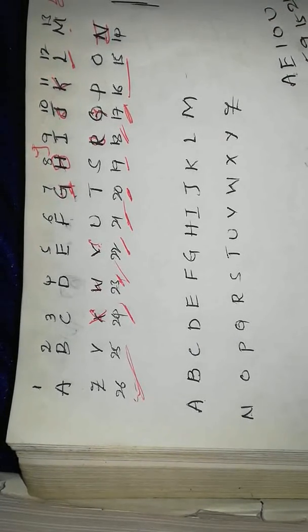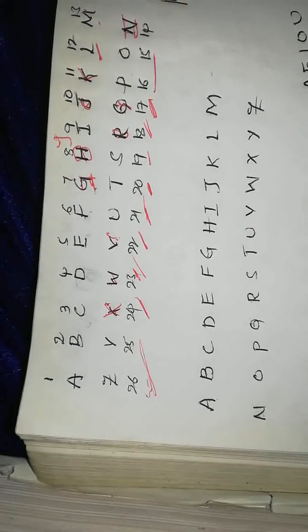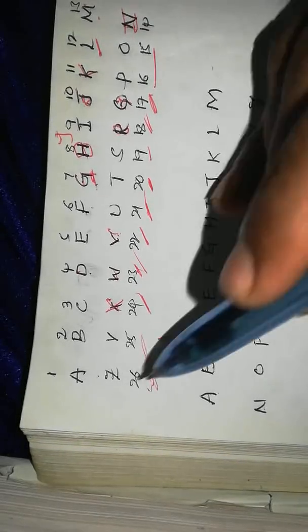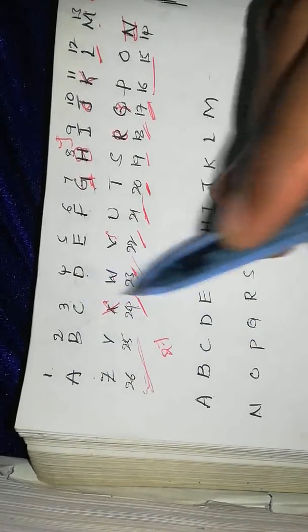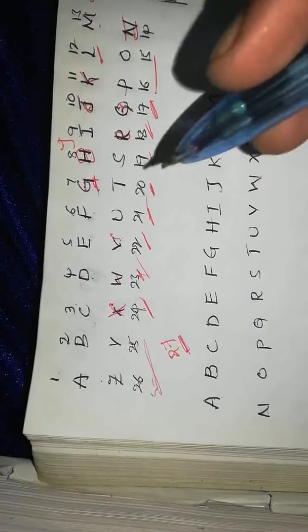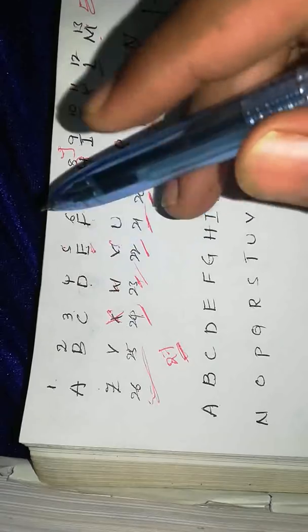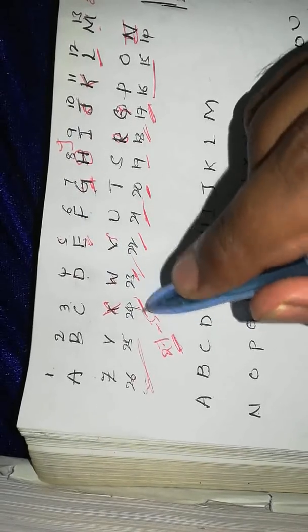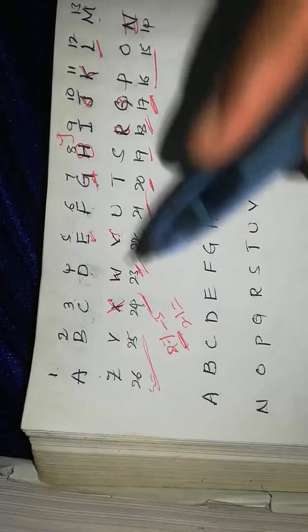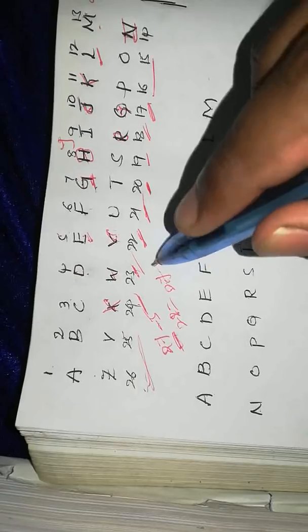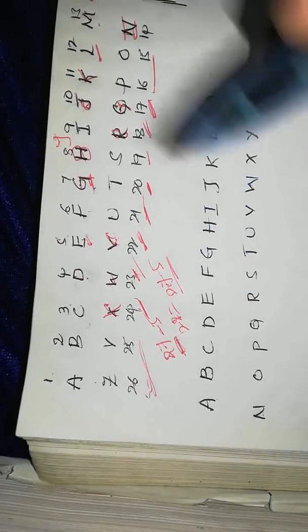It is easy. Reverse order: for example, E equals 5. The opposite of E in reverse coding: E is 5, so 27 minus 5 equals 22. So reverse coding uses the formula: 27 subtract the position number.